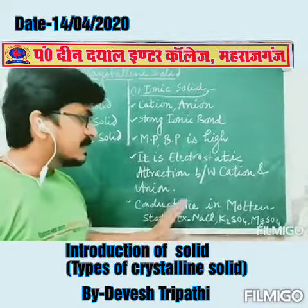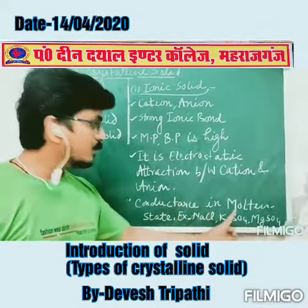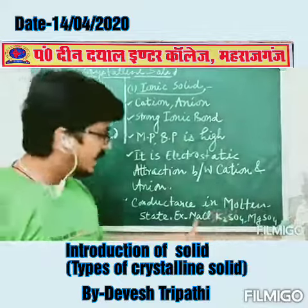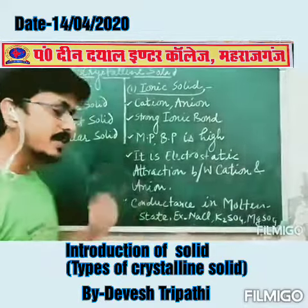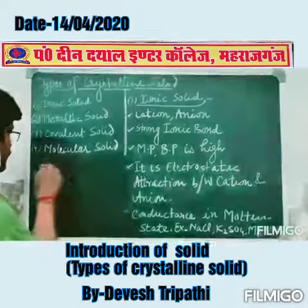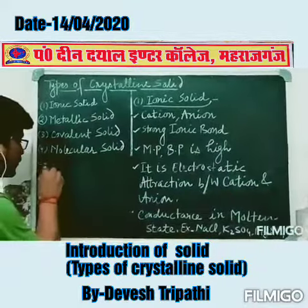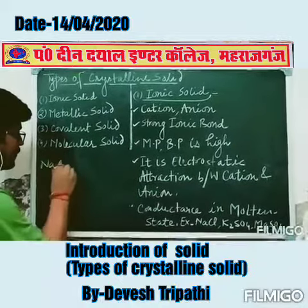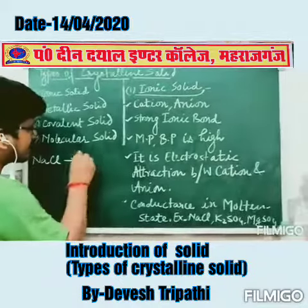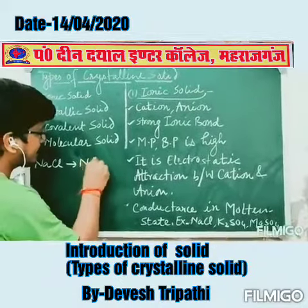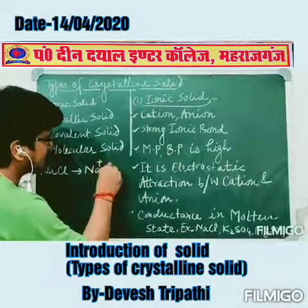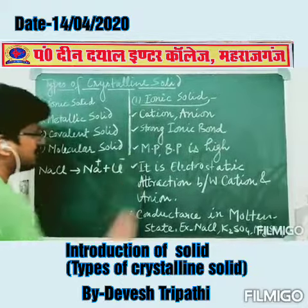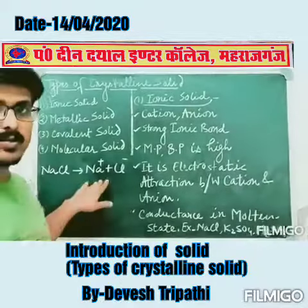For conductance in the molten state, take NaCl — we divide it to remove the charge into Na⁺ and Cl⁻, and that enables conductance.